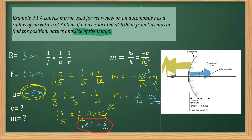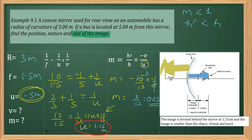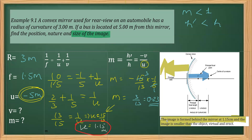Since m is less than 1, it implies that the size of the image is smaller than the size of the object, as m is the ratio of image size to object size. Our final concluding statement: the image is formed behind the mirror at a distance of approximately 1.15 meters. The image is smaller than the object, virtual, and erect.